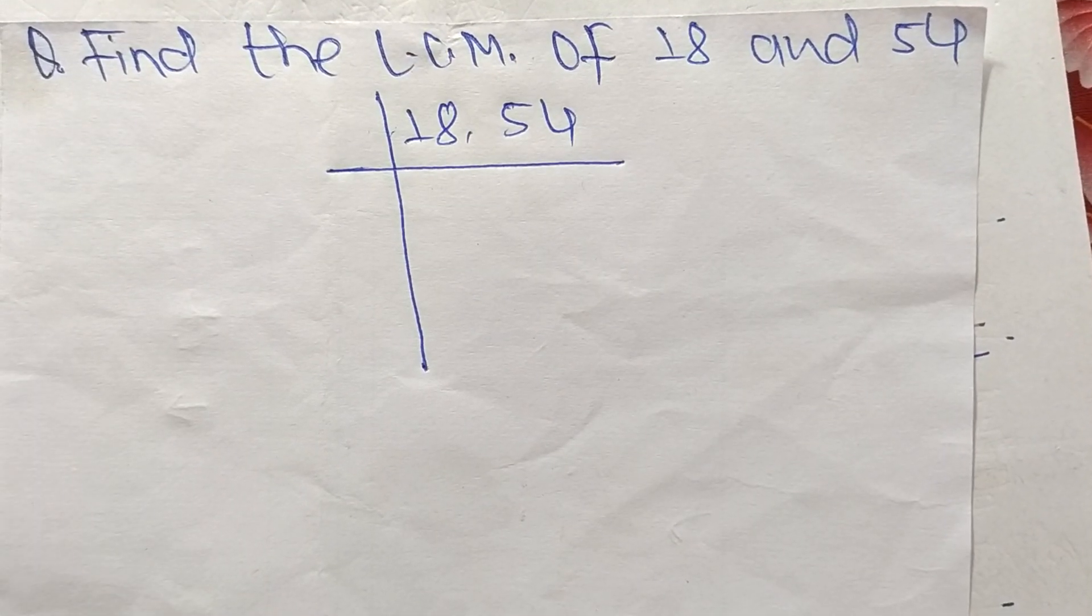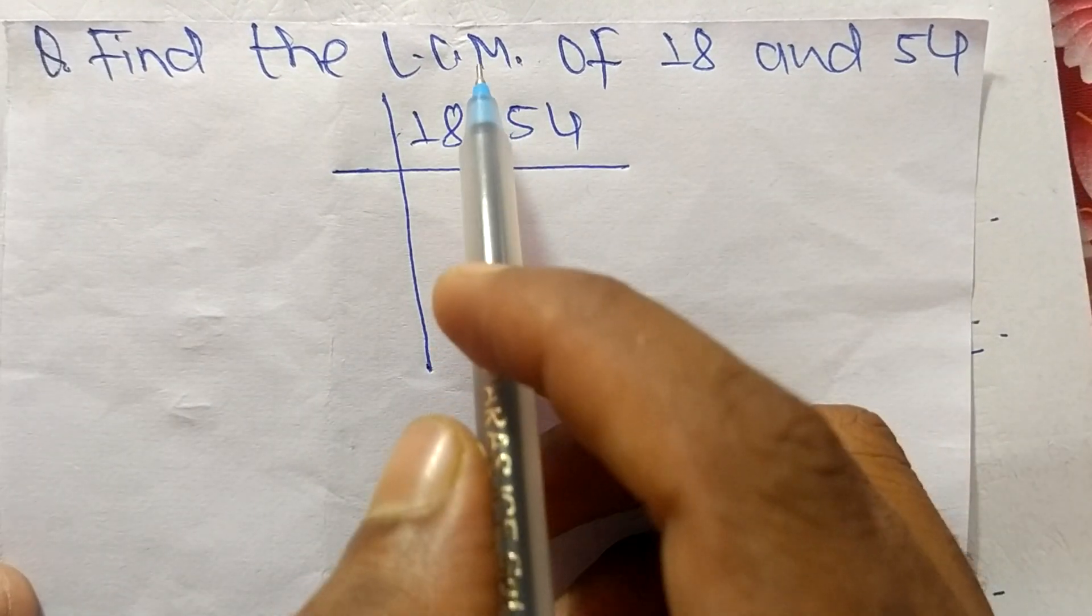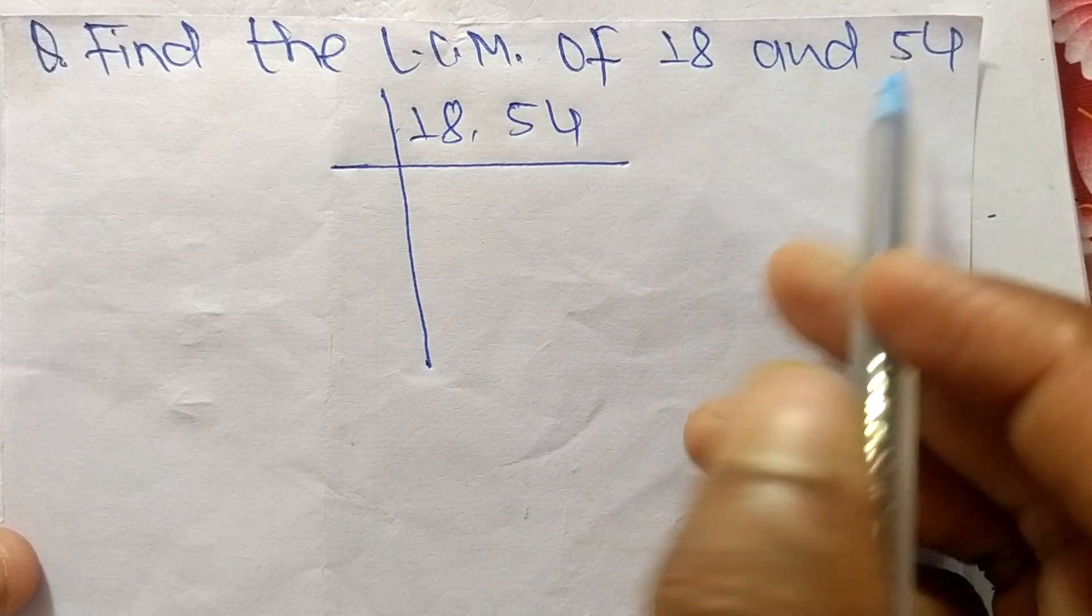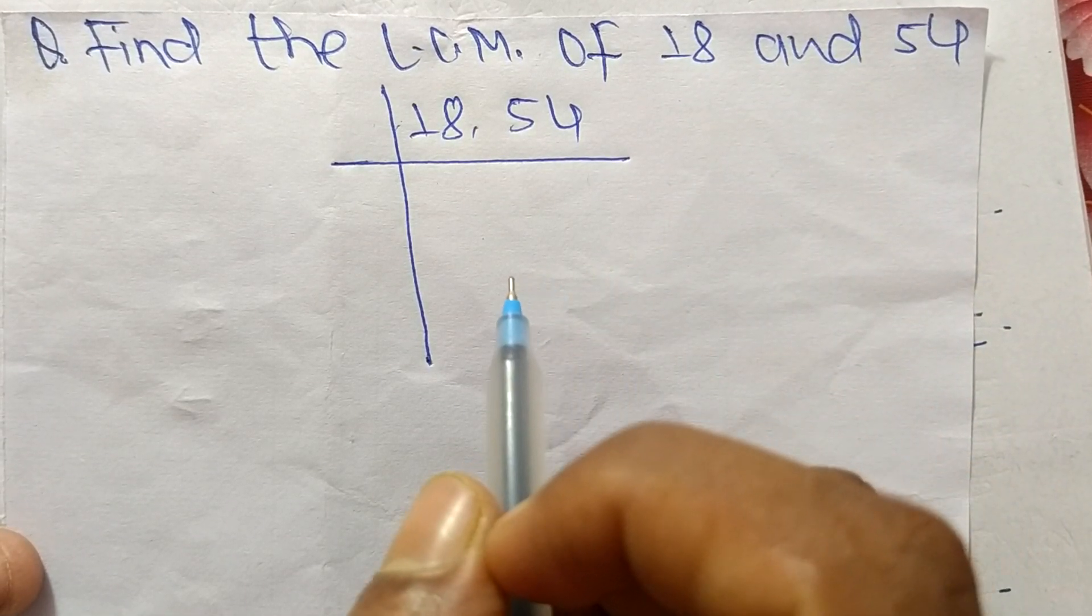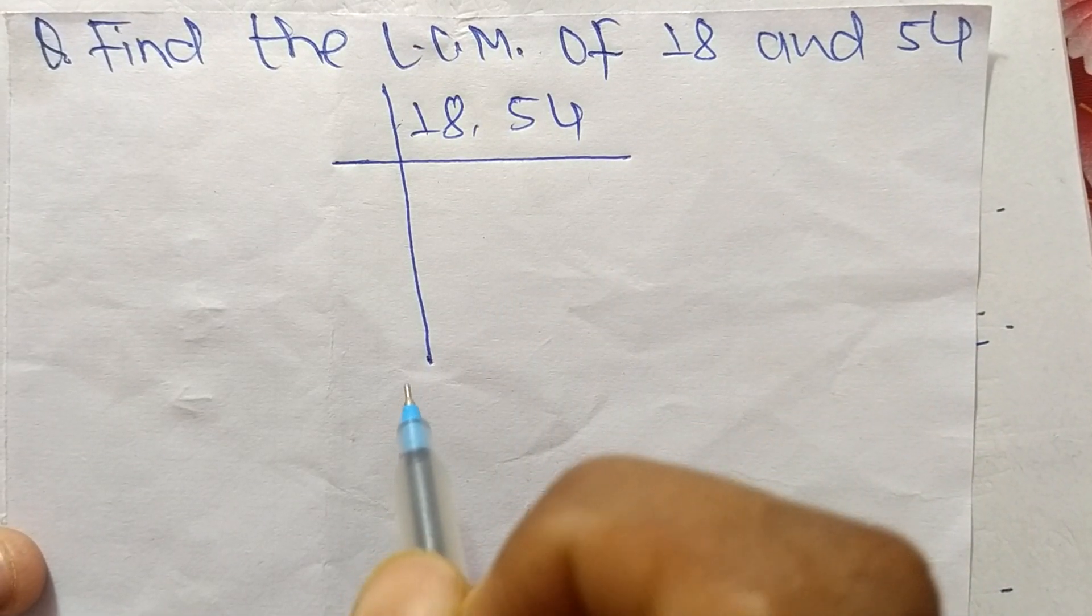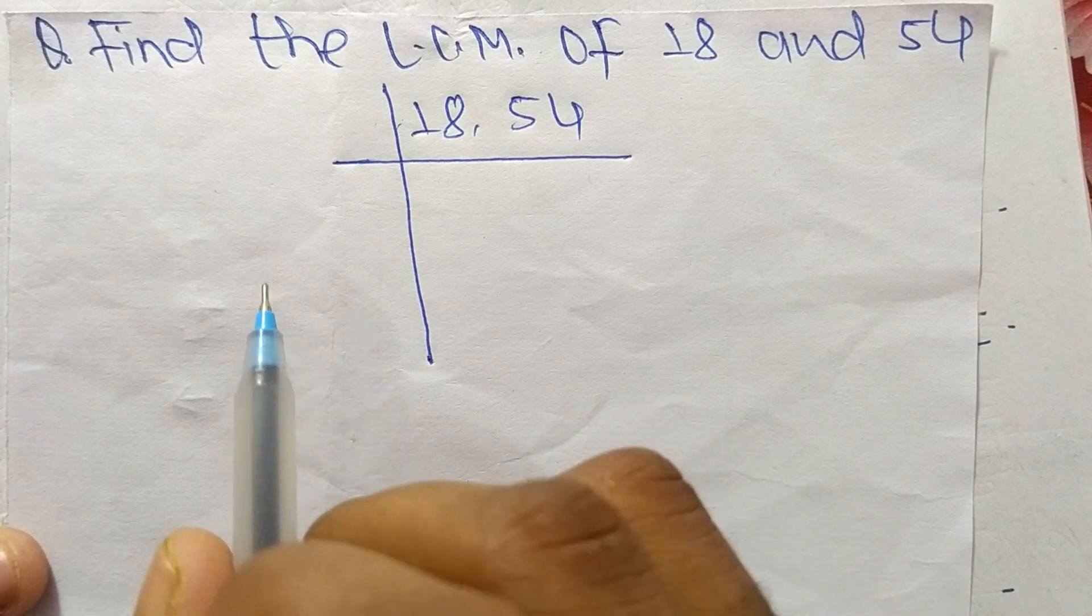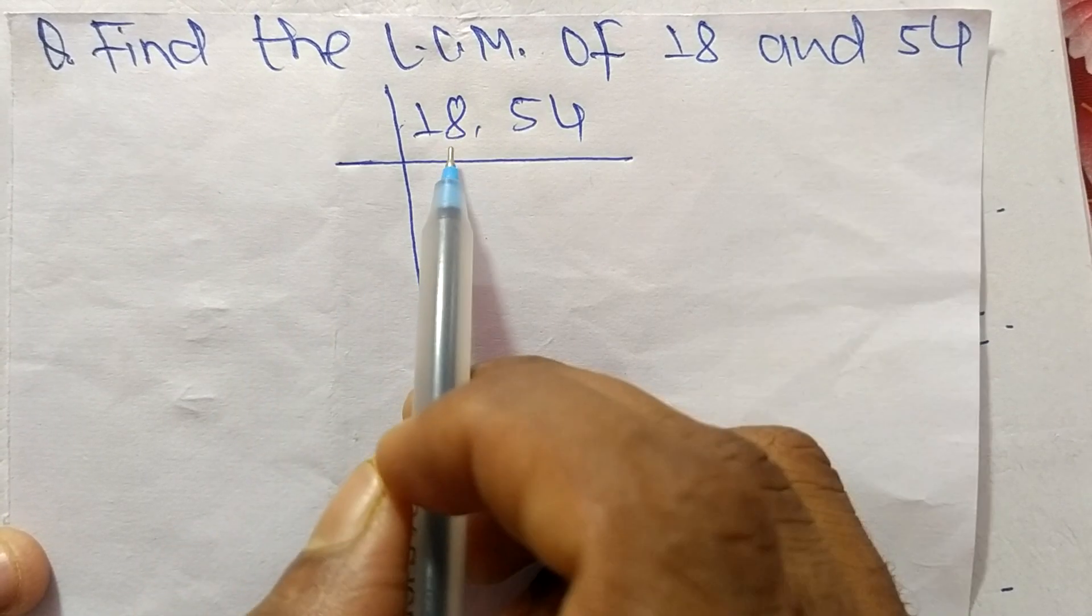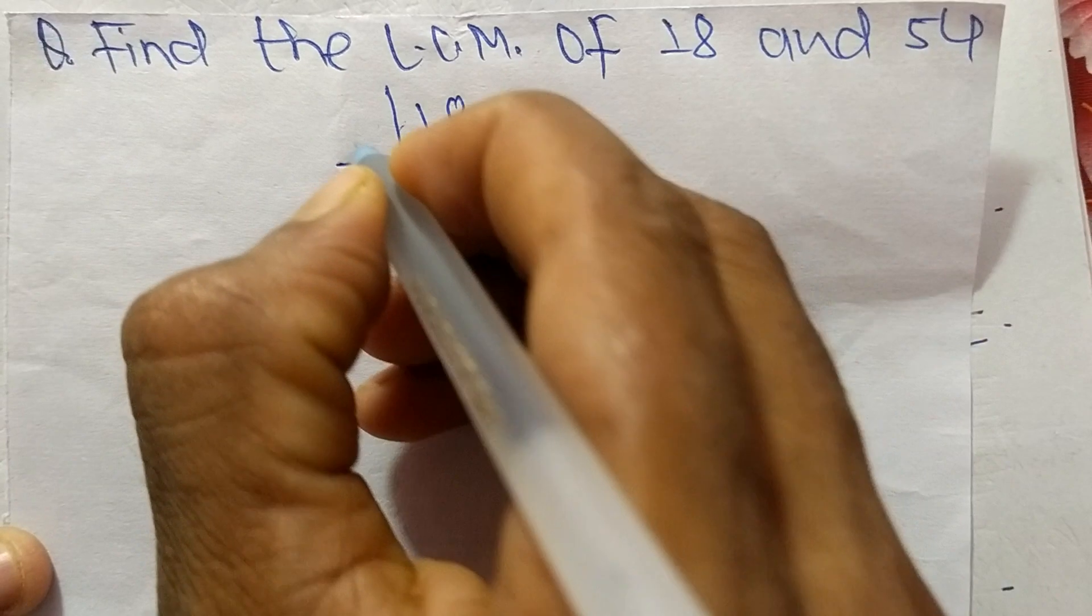So today in this video we shall learn to find the LCM of 18 and 54. To find LCM, first of all we have to choose the lowest number that can exactly divide 18 and 54. So the number is 2.